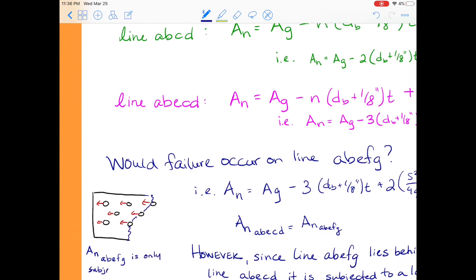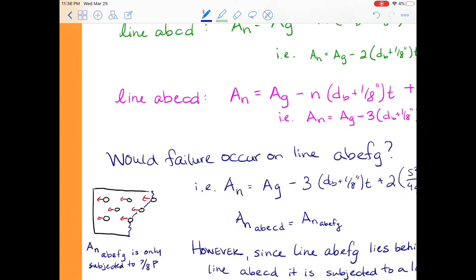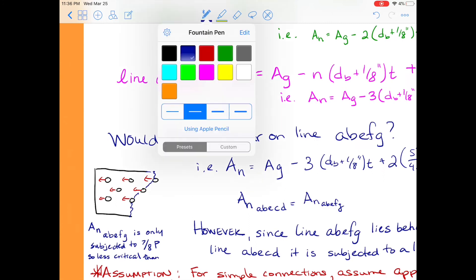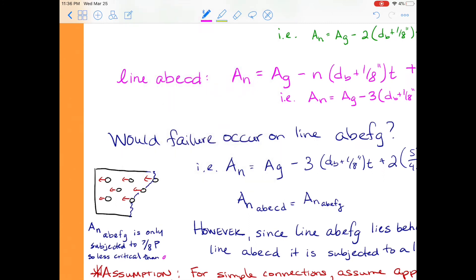So our net section area along A, B, E, F, G is only subjected to seven eighths of the load P. And so when we think about would failure occur on this line versus a line like A, B, E, C, D, we would say probably not because it has less load. So it's less likely to fracture because it has a lower load than the same net area A, B, E, C, D that was subjected to the full load of P.